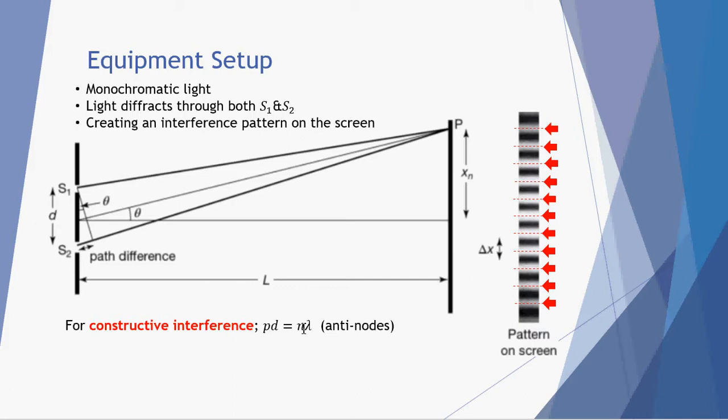Now let's explain this path difference concept. You can see here that the distance from source 1 to point P is shorter than the distance traveled from source 2 to point P. In fact this extra little distance is how much further light has to travel from source 2 to point P than from source 1 to point P. That little extra bit of distance is what we refer to as the path difference. When that path difference is equal to an exact multiple of the wavelength lambda, we get constructive interference or antinodes. These are seen as bright fringes on our screen.